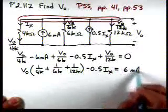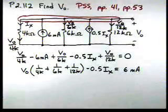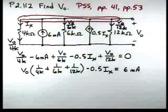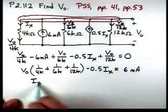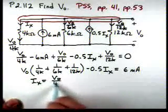Now, step 2 of that strategy on page 53 says write the equation that specifies a relationship between the dependent source and its controlling parameter. Well, if we look in our circuit, IX is V0 over 4K.